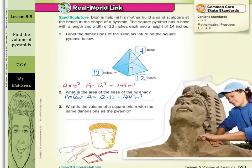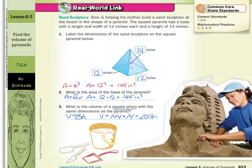In question three, what is the volume of a square prism with the same dimensions as the pyramid? Volume equals the area of the base times the height. We already know the area of the base is 144. The height, if this were a prism, would be 14, which equals 2,016 inches cubed.